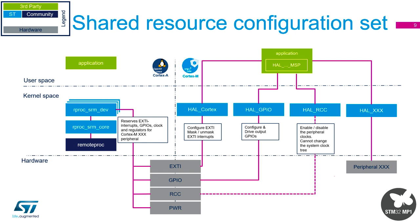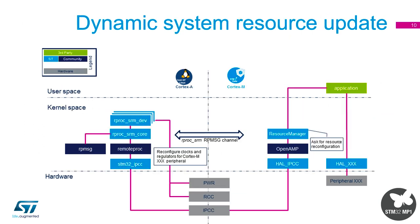Any other peripherals the M4 has 100% control of with no problems. For power, there's no direct attempt to control it from the M4 — power changes have to be requested. The M4 has to ask the system to change power modes by sending a standard message to the A7. So if your Cortex M4 application needs to change its power structure, it goes to the resource manager and asks for reconfiguration.